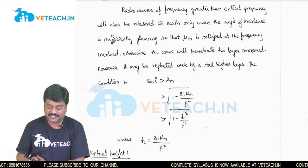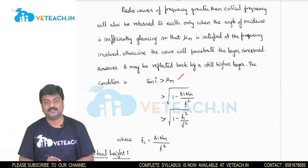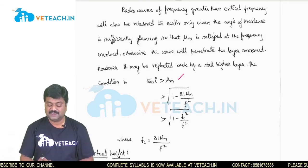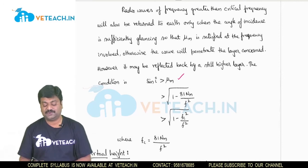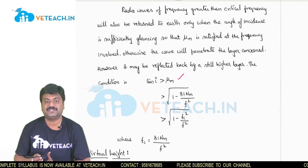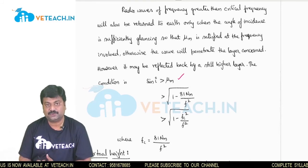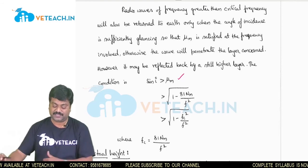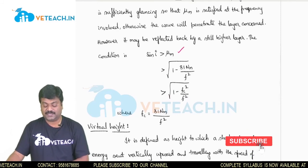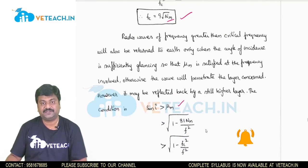Regarding the angle of incidence: if the angle of incidence is more than the maximum refractive index condition, we have sin i greater than square root of 1 minus 81nm divided by F-squared. In terms of relating normal frequency to critical frequency, this can be rewritten as greater than square root of 1 minus Fc-squared divided by F-squared, where Fc is derived from 81nm.